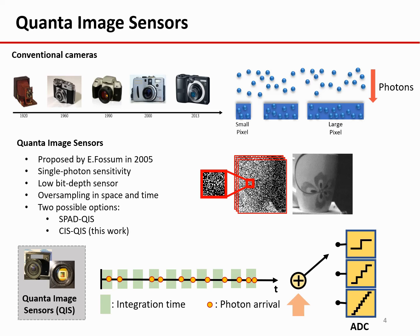Currently, there are two varieties of QIS. One is based on single photon avalanche diode, and the other is based on CMOS image sensor, or CIS. In this work, we use the CIS-based QIS.